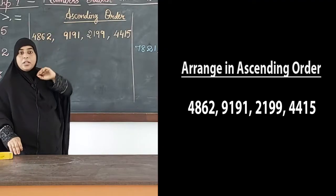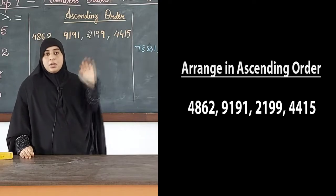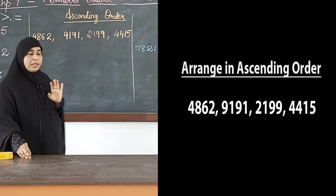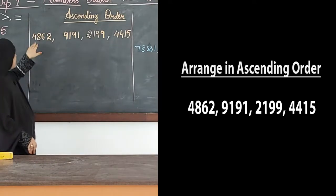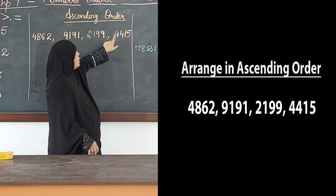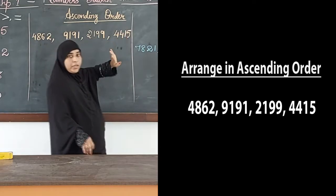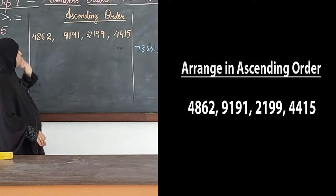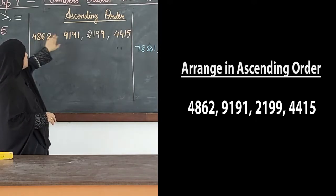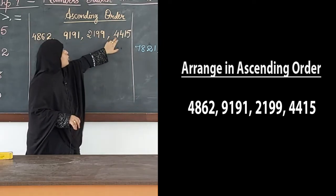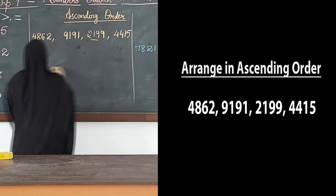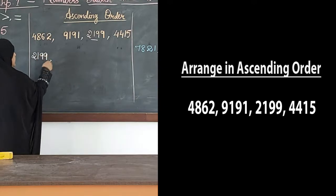First we have ascending order. Ascending order means we arrange the numbers from small to big — we start with the smallest number and go on until we reach the greatest. I have 4 numbers: 4862, 9191, 2199, and 4415. We start by looking at the thousands place: 4000, 9000, 2000, 4000. The smallest value is 2000, so 2199 is our first number.